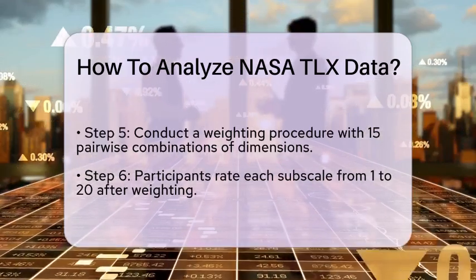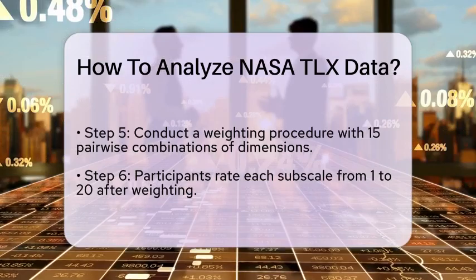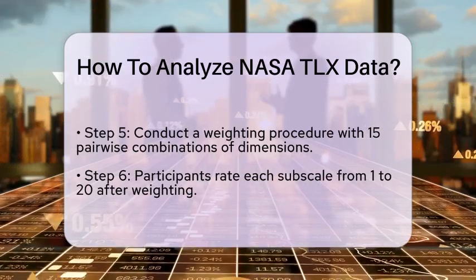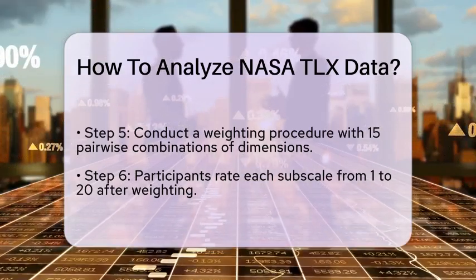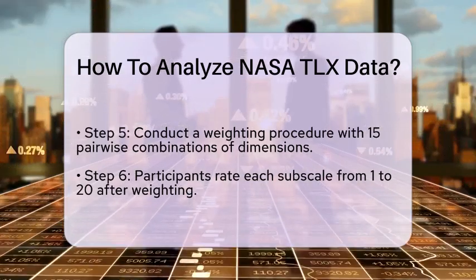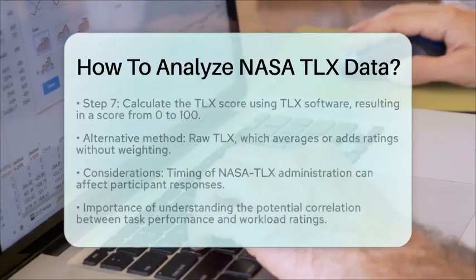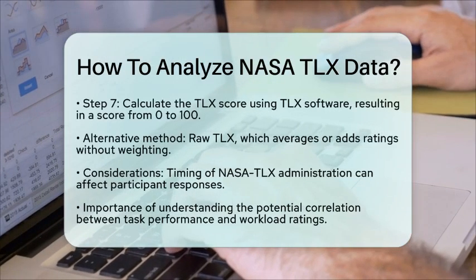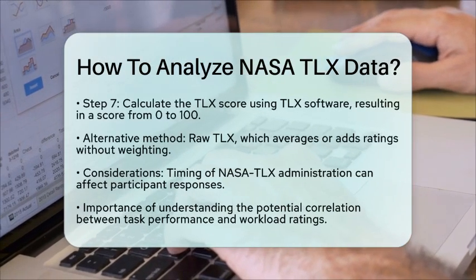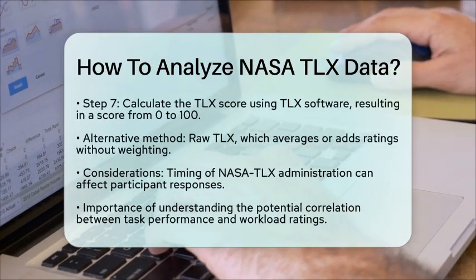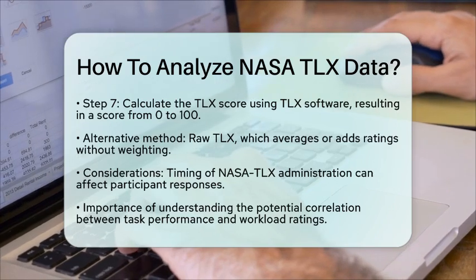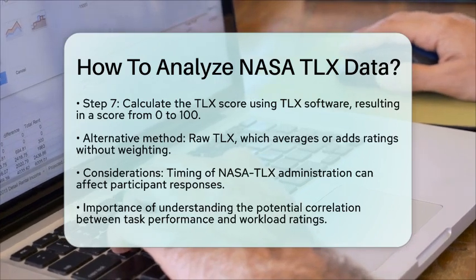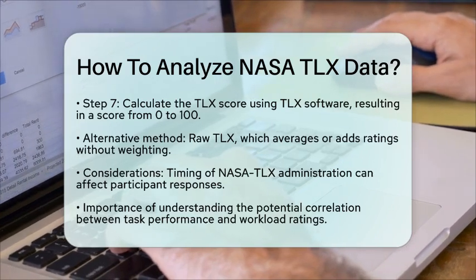Alternative method: Raw TLX. Some researchers prefer to use the raw TLX method, which eliminates the weighting process. Here, you simply average or add the ratings from each subscale to get an overall workload estimate. This method is simpler but still effective.